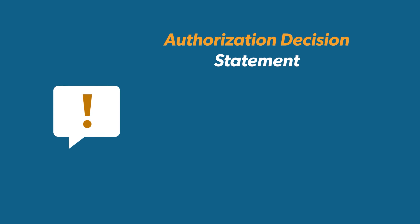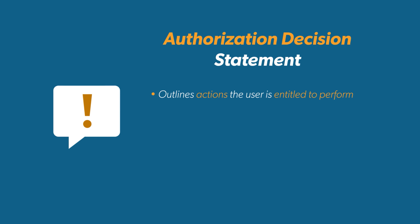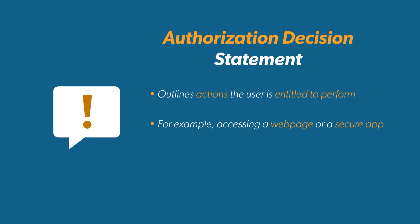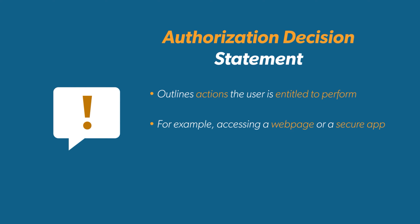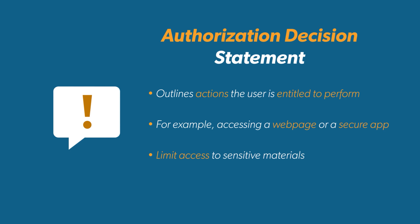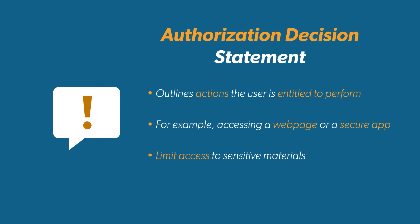The third is the Authorization Decision Statement. The Decision Statement outlines what actions a user is entitled to perform, such as accessing a particular webpage or a secure area of an app. For instance, it's important to limit who can access private health information, and those restrictions can be specified using assertion statements.